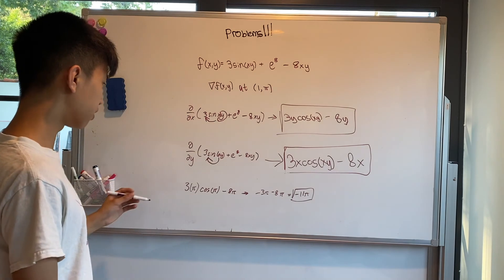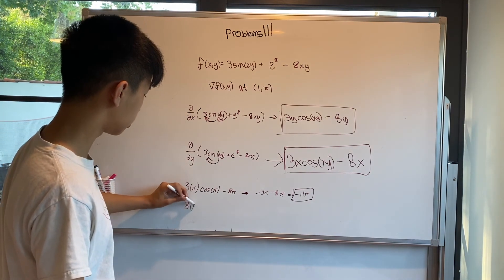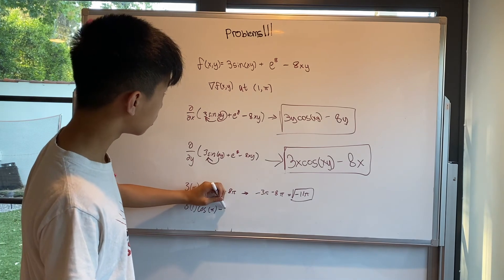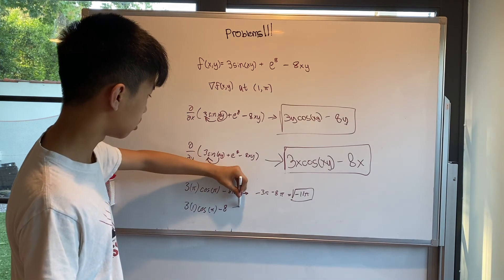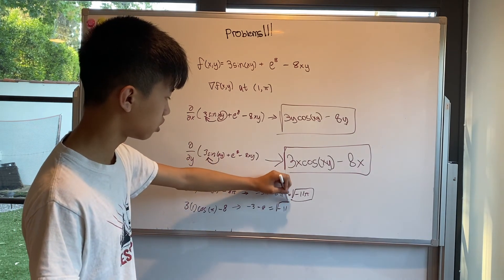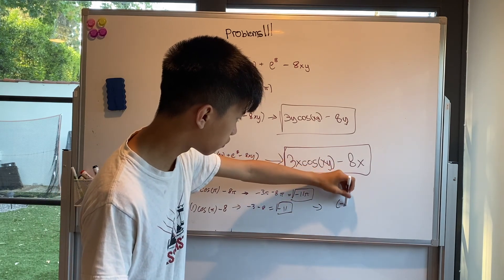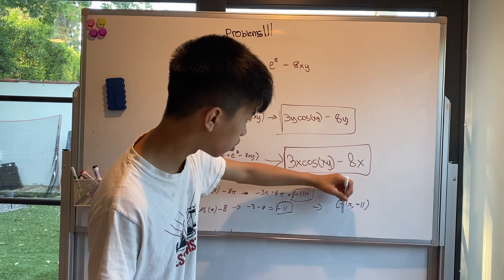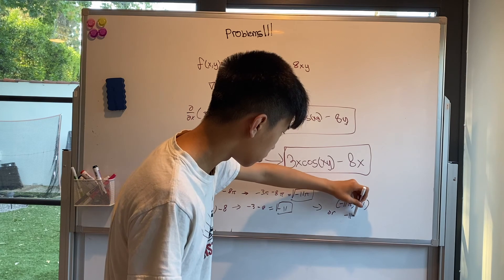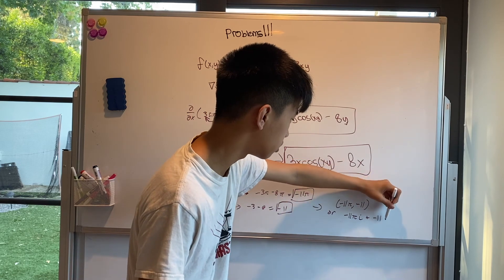So our gradient's first component is −11π. For the partial derivative with respect to y, we plug in x = 1 and y = π: 3(1)·cos(π) − 8(1) = −3 − 8 = −11. Therefore, the gradient is (−11π, −11), or −11πi + (−11)j.